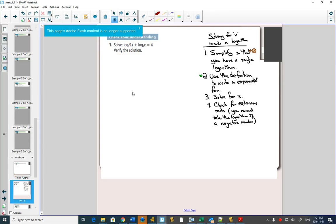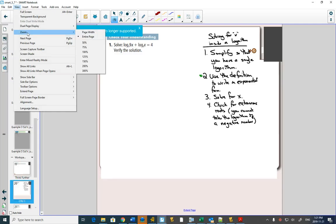So, solve log₃(9x) plus log₃(x) equals 4. We're solving for x inside of a logarithm. The question is, do we have a single logarithm? No, we have two logarithms right now.